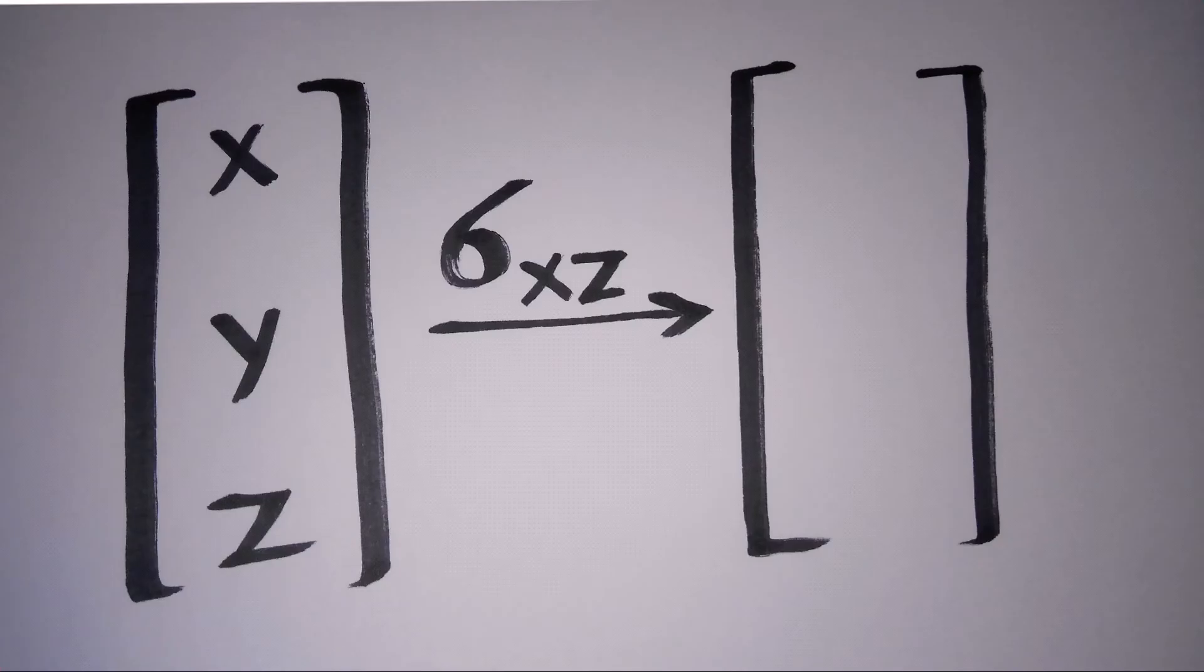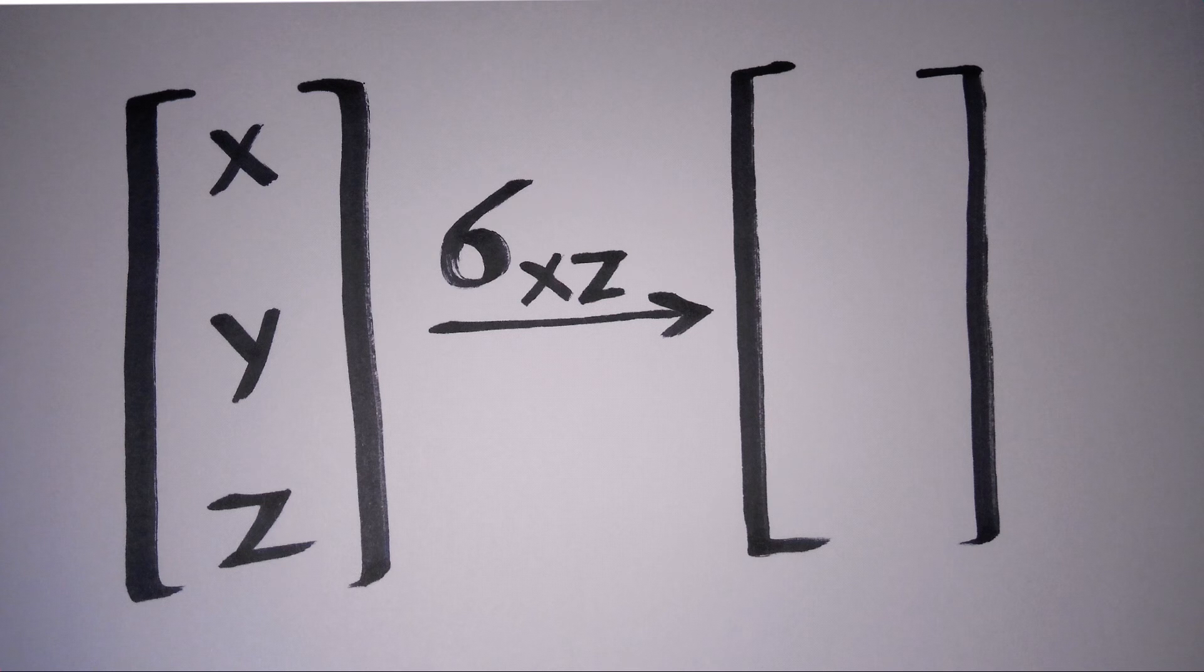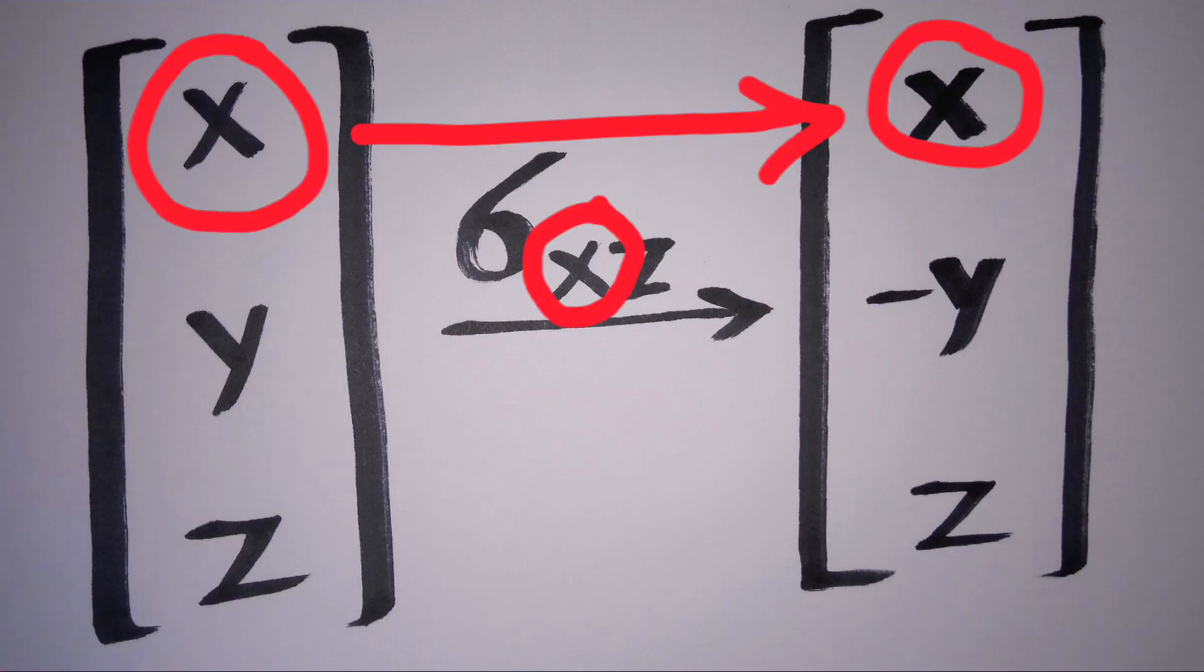Let us consider option A. First, again we will write x, y, and z. The operation given here is xz. Just now I explained what is given here. We don't have to change the sign for those, so x remains unchanged.